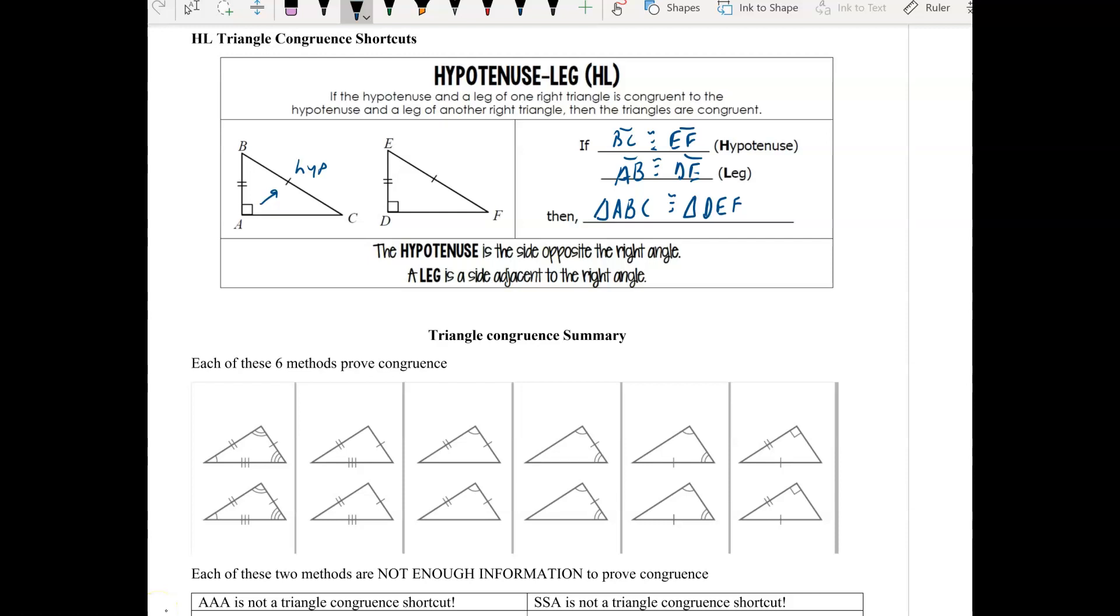Okay so with the addition of hypotenuse leg, we now have a total of six different ways to prove triangles are congruent. The first way is just the definition of congruence, this is just the definition. It's not even a shortcut, as you can see in the picture, every single part of the two triangles are marked as congruent, so there's no shortcut there.